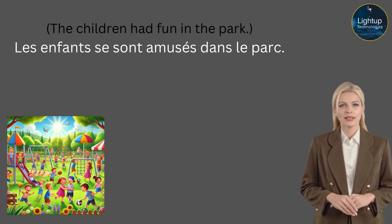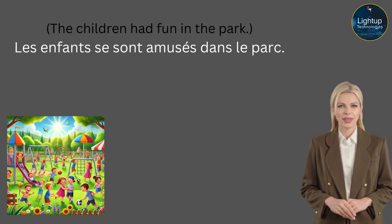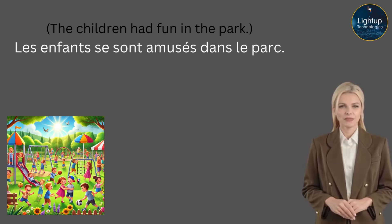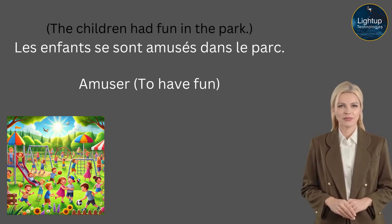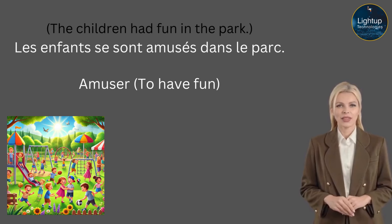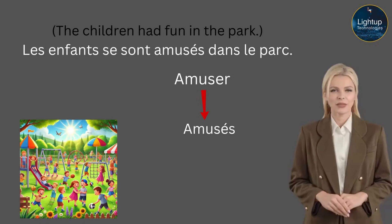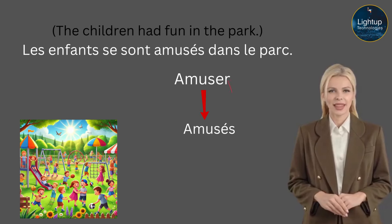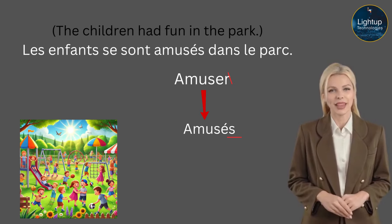Another example using a reflexive verb: 'The children had fun in the park' — Les enfants se sont amusés dans le parc. The se here reflects the reflexive verb amuser, which means 'to have fun.' We are using passé composé and for reflexive verbs we use être. Just drop the r, add an accent, and add an s because it is masculine plural.